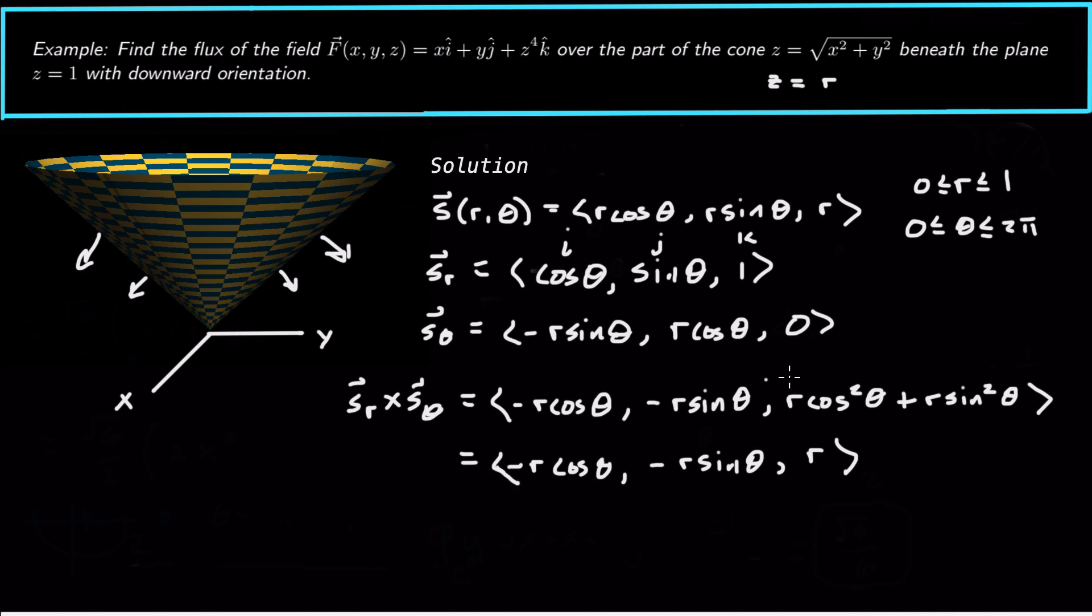So that is potentially our normal vector, but I have to check for the r values that I have here. What are the z components doing? This has a positive z component, so this is the normal vector that points up. So I've got these normal vectors that point up for this cone. So sr cross s theta points up, and I don't want to be finding the flux up. I want to find the flux down. So this points up. So we use the negative instead. So we use s theta cross sr instead. And that's going to be just negate this. So we get r cosine theta, r sine theta, and negative r. So there's our normal vector.